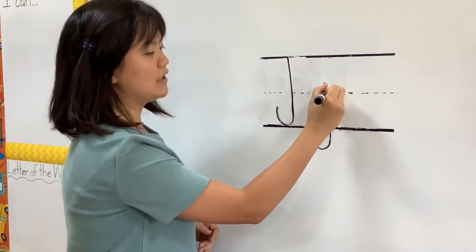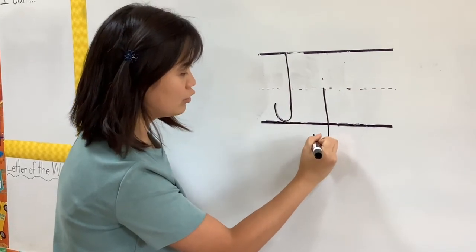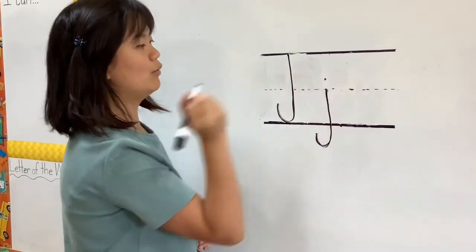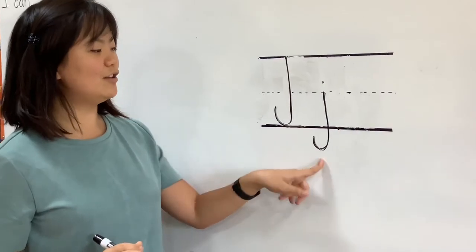So lowercase j starts from the middle, goes all the way down with a hook like that, and one dot. Uppercase and lowercase J.